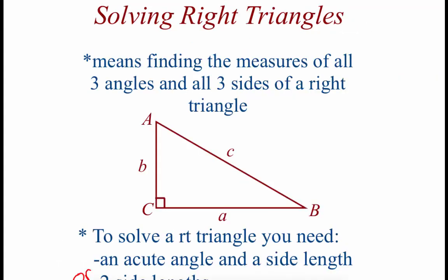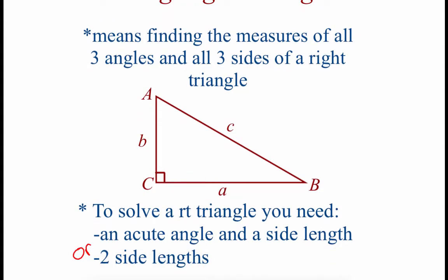So let's take a look at what solving a right triangle means. What it means is that we're going to be finding the measures of all three angles in our triangle, and we're going to find the length of all three sides of our right triangle. In order to solve a right triangle, we need a couple pieces of information. We either need an acute angle and one of the sides, or we could have just two side lengths.